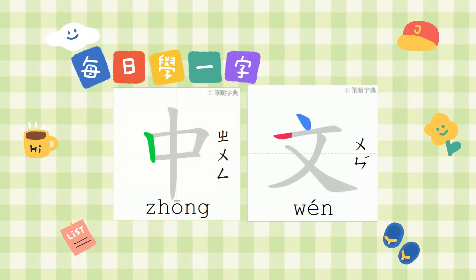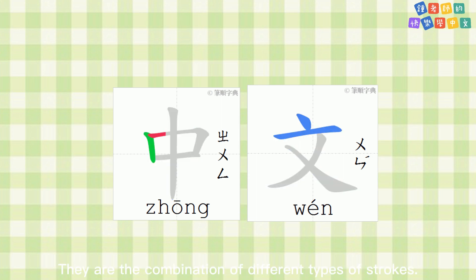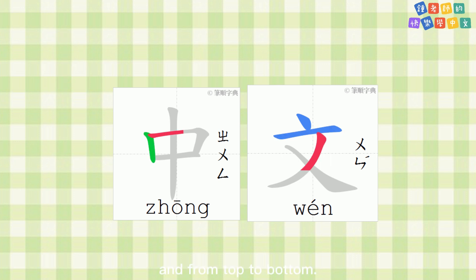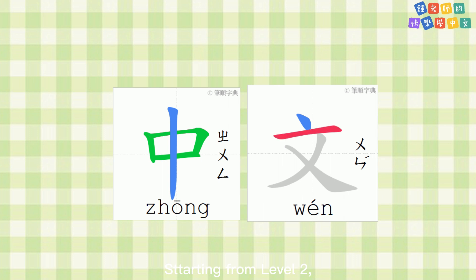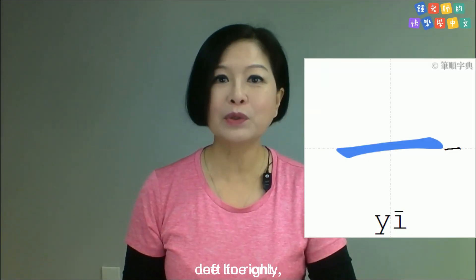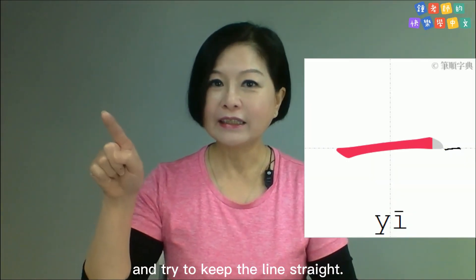Did you notice that most Chinese characters look like a square? They are combinations of different types of strokes. We usually start strokes from left to right, and from top to bottom. Starting from level 2, we will learn how to write some easy Chinese characters. We will start from this one — 一. Left to right, one line only. Try to keep the line straight.